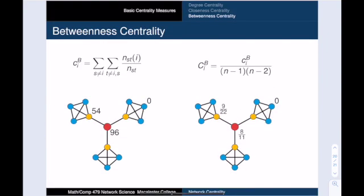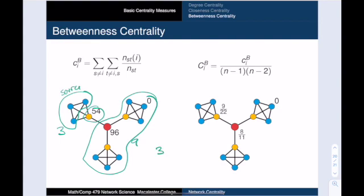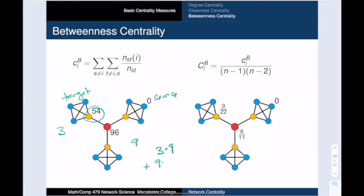So here are the betweenness and normalized betweenness centrality values for this network. And let me show you how to calculate one of them. Let's pick this yellow vertex. Alright, in order for this yellow vertex to be on my path, I must be traversing from one side of the yellow vertex to the other. And there are three vertices that live over here, and nine vertices that live over here. And so if I take my source from this side, I have three choices. And then I take my target from this side, I have nine choices. Or I could do the reverse, and I could take my source from over here, and my target from over here. And so I have to do the calculation in reverse. And so I get 27 plus 27, which is 54.